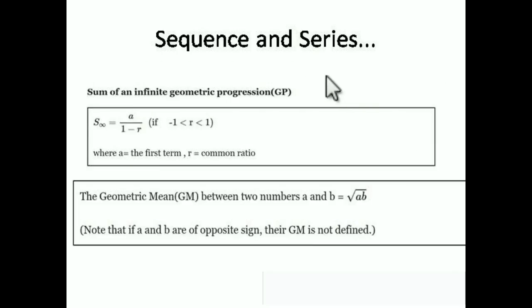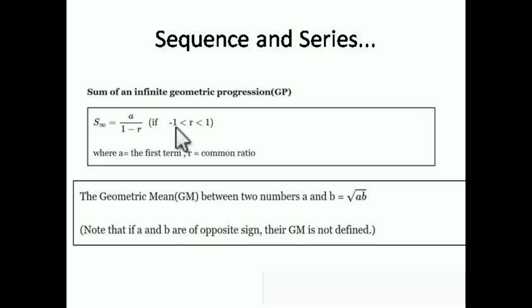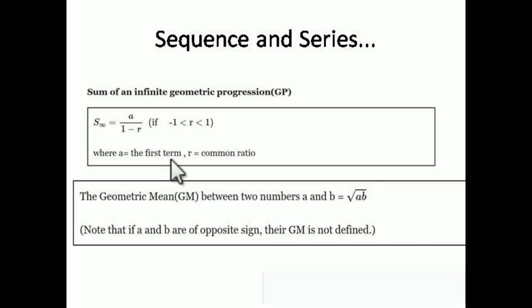This is also an important formula: the sum of an infinite Geometric Progression. If a series has an infinite number of terms in GP, then S∞ = a/(1 − r), where a is the first term and r is the common ratio. This formula applies when −1 < r < 1.